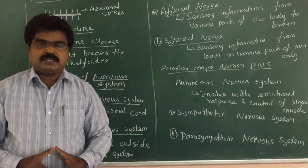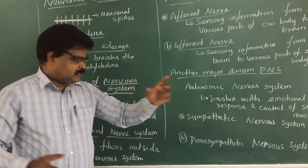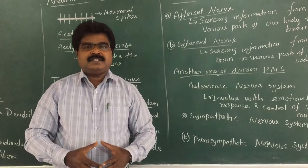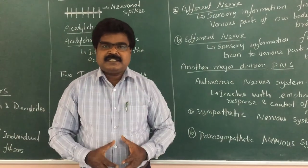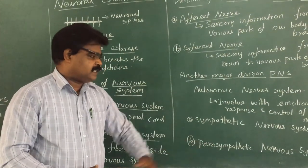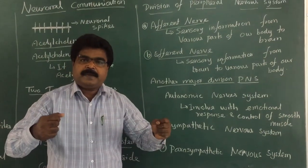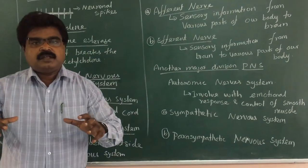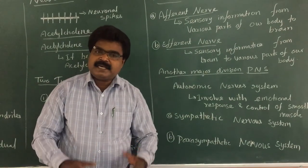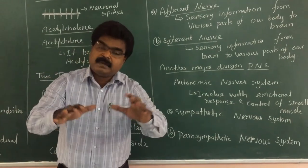The Sympathetic Nervous System increases the heart rate — for example, when you are running or when you witness an accident, your heartbeat immediately increases, and that is done by the Sympathetic Nervous System. When you come to rest, the heartbeat returns to its normal state, and that is done by the Parasympathetic Nervous System. So, the Sympathetic Nervous System increases the heart rate, while the Parasympathetic Nervous System normalizes it.